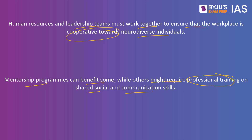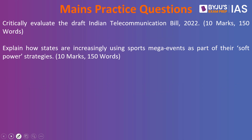Organizations must create a more accommodating environment for neurodiverse individuals, including mentorship programs and professional training on social and communication skills, as well as neurodivergent-friendly offices that cater to diverse sensory responses. Practice questions for today: Critically evaluate the Draft Indian Telecommunication Bill 2022, and explain how states are increasingly using sports mega events as part of their soft power strategies. Write all answers in the comment section for peer review. That's it for today — thank you for watching, all the best.